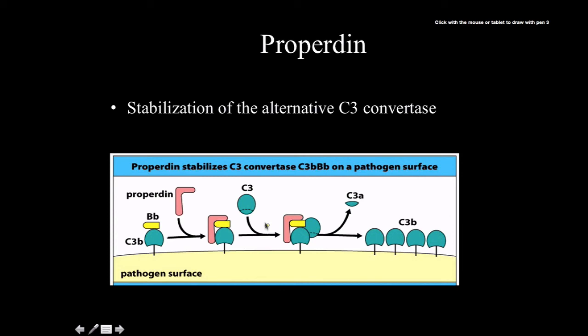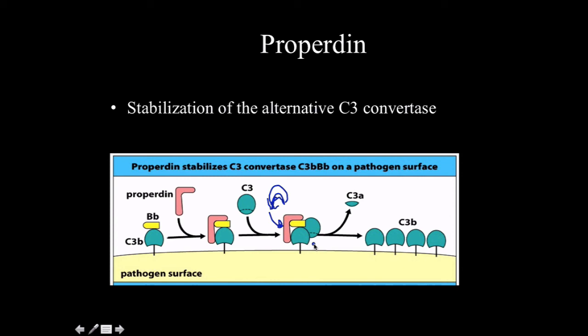Here is a diagram showing how properdin acts to stabilize the alternative C3 convertase. Basically, it just binds here and with this binding here, degradatory enzymes that would like to block and munch on it can't get into it. They can't bind to the convertase and inactivate it. So the convertase will keep doing what it's doing.